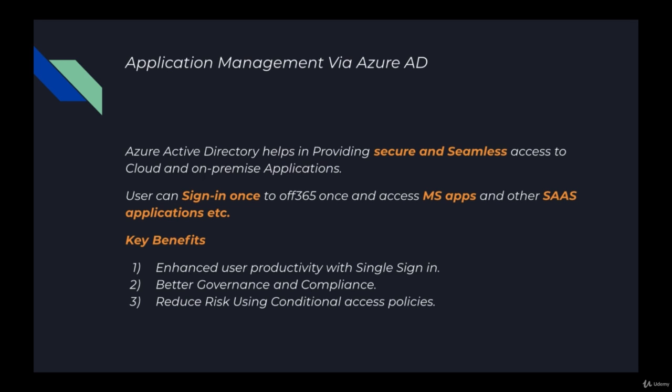We can reduce risk using Conditional Access Policy. There is an option to apply conditional access so that only certain users from certain locations can log into a particular app. For example, MFA can be enforced to access a particular application, or the user must be logged in from an organization-compliant device. Azure AD provides a number of options to provide access to a certain application for a certain user under certain conditions, giving us better control.